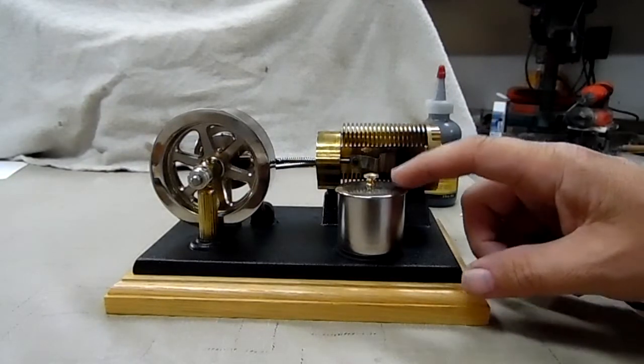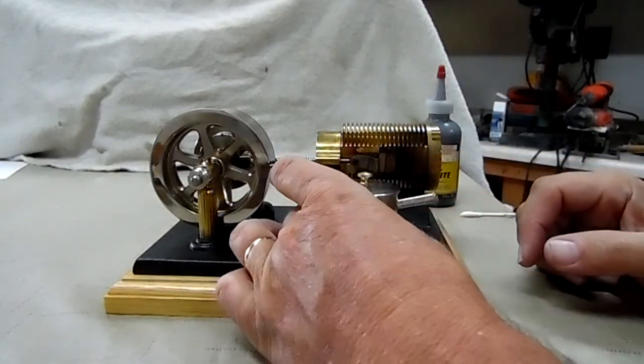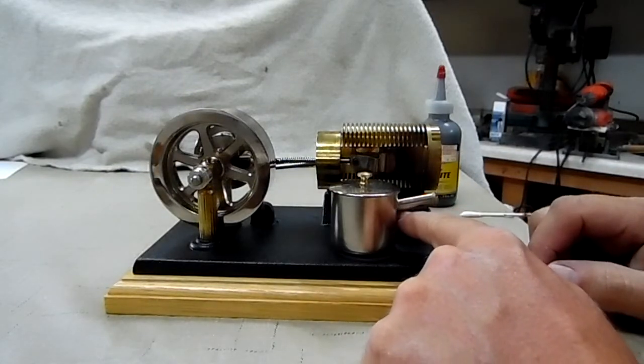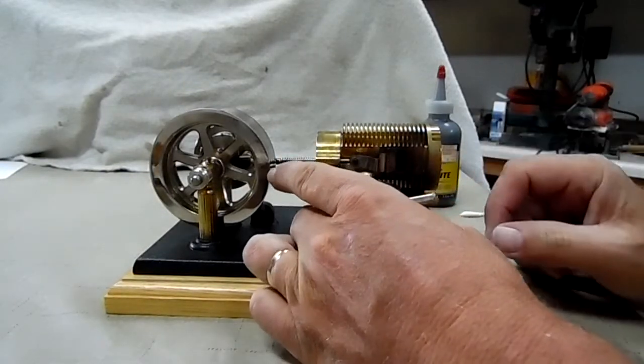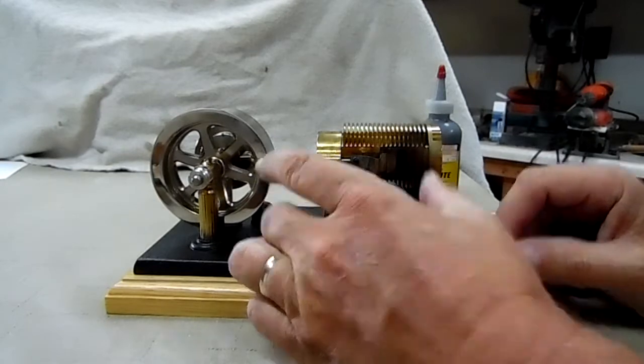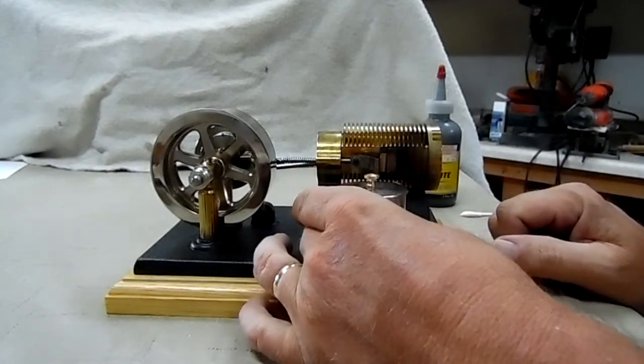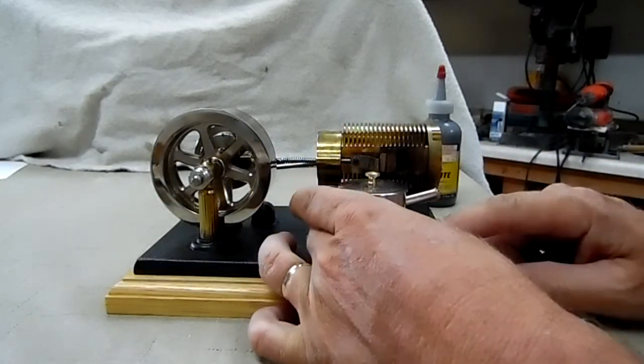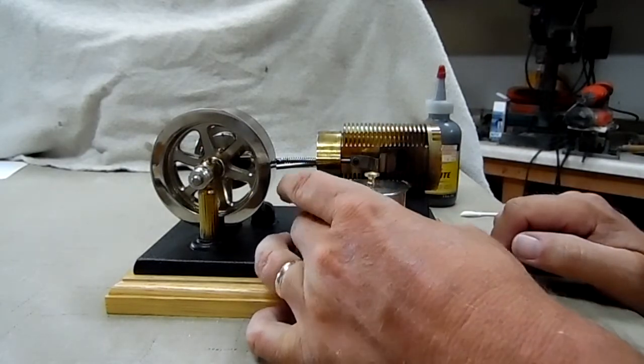And lastly it's very important not to overfill this little container. You don't want it above the bottom of that stem right there because if you do it's gonna leak out and believe me you'll have a fire and it'll cover the table and go all over the place. So you don't want that. So make sure you only fill this about halfway and that's plenty enough to run.